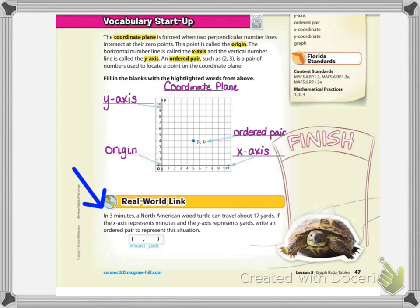If you look down below at the real world link, it says here, in three minutes a North American wood turtle can travel about 17 yards. If the x-axis represents minutes and the y-axis represents yards, write an ordered pair to represent the situation. Alright, so you'll notice here that they already gave you the parentheses and a comma that separates the two numbers. The x number is the number that goes first. So ordered pairs are always written as the ordered pair x goes first then y. So in the word problem it tells us that the turtle travels in three minutes. The amount of time that the turtle is traveling is three minutes. So we want to make sure we put our three in the x spot which is above where the minutes is and the 17 to represent the number of yards that it traveled.